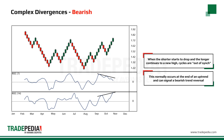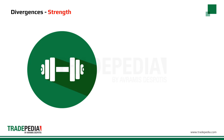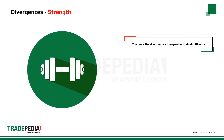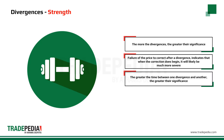One of the indications towards the strength of divergences is the number of divergences — the more the divergences, the greater their significance. Failure of the price to correct after a divergence indicates that when the correction does begin, it will likely be much more severe. The time span between divergences is another indication towards strength: the greater the time between one divergence and another, the greater their significance.